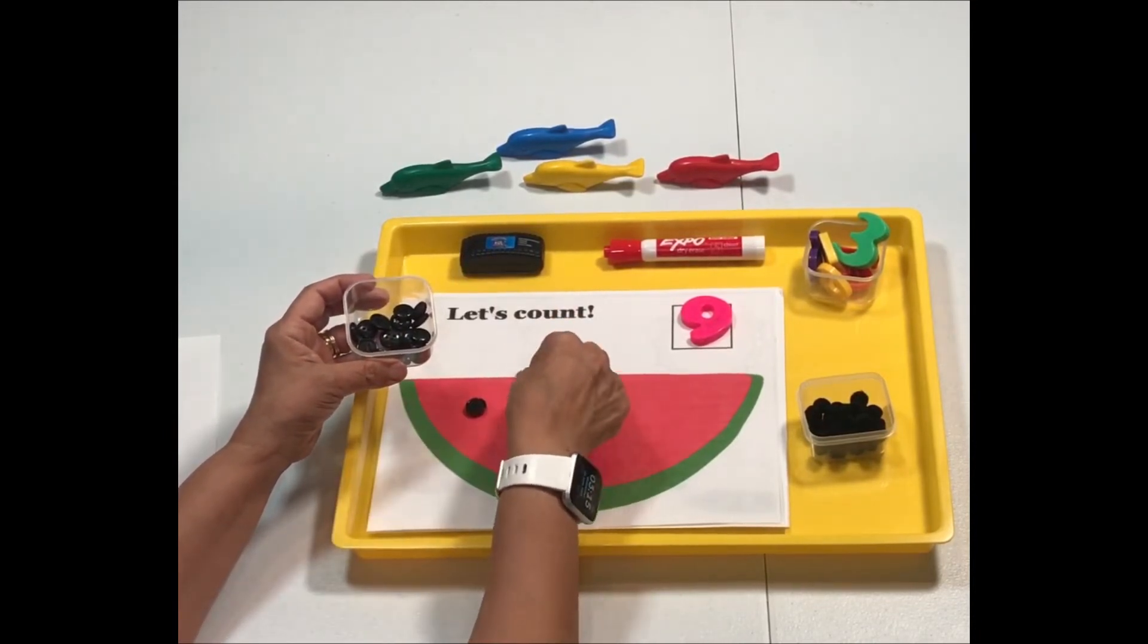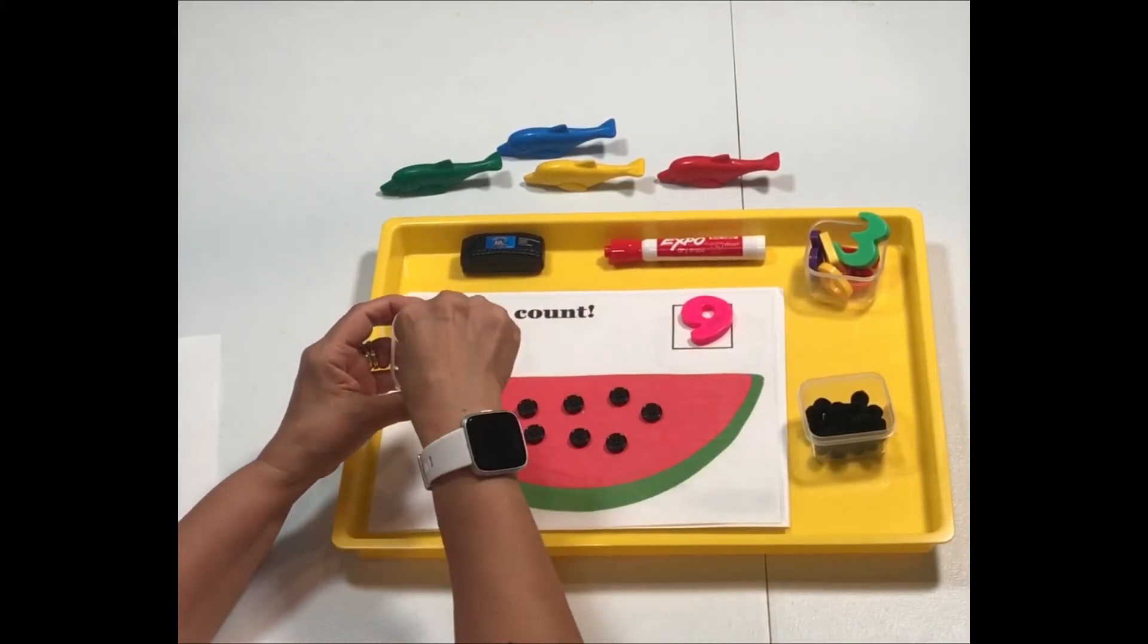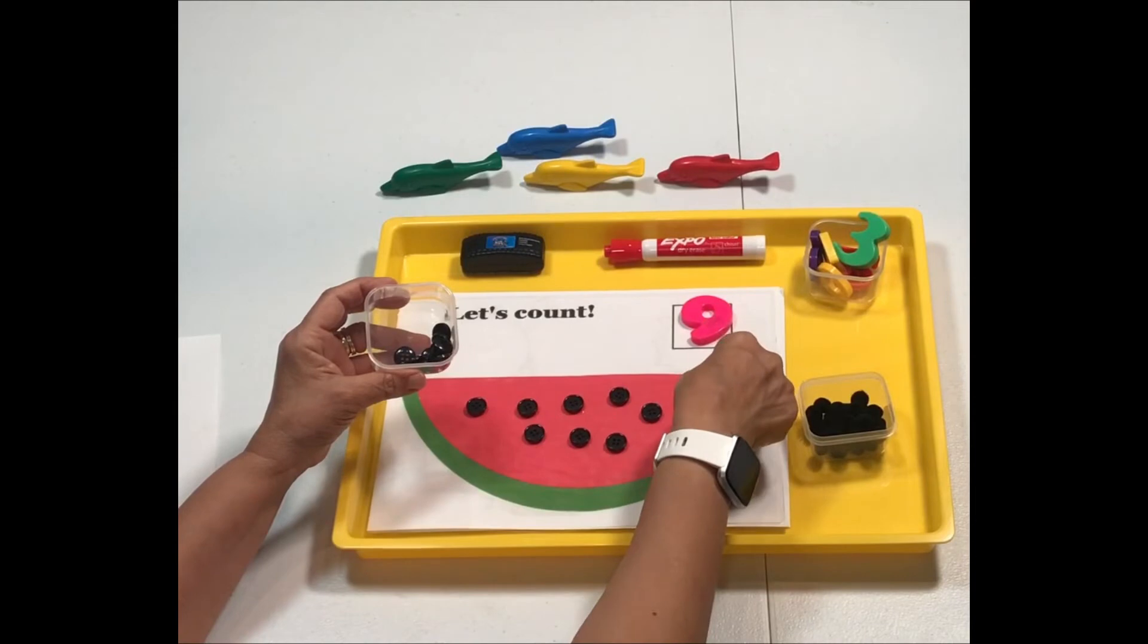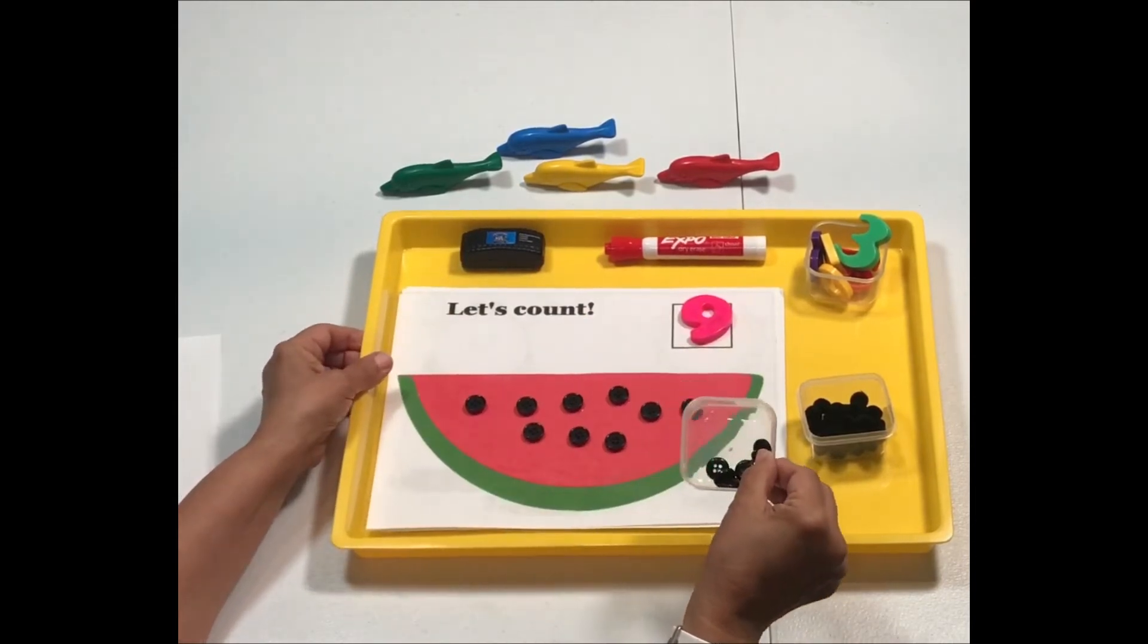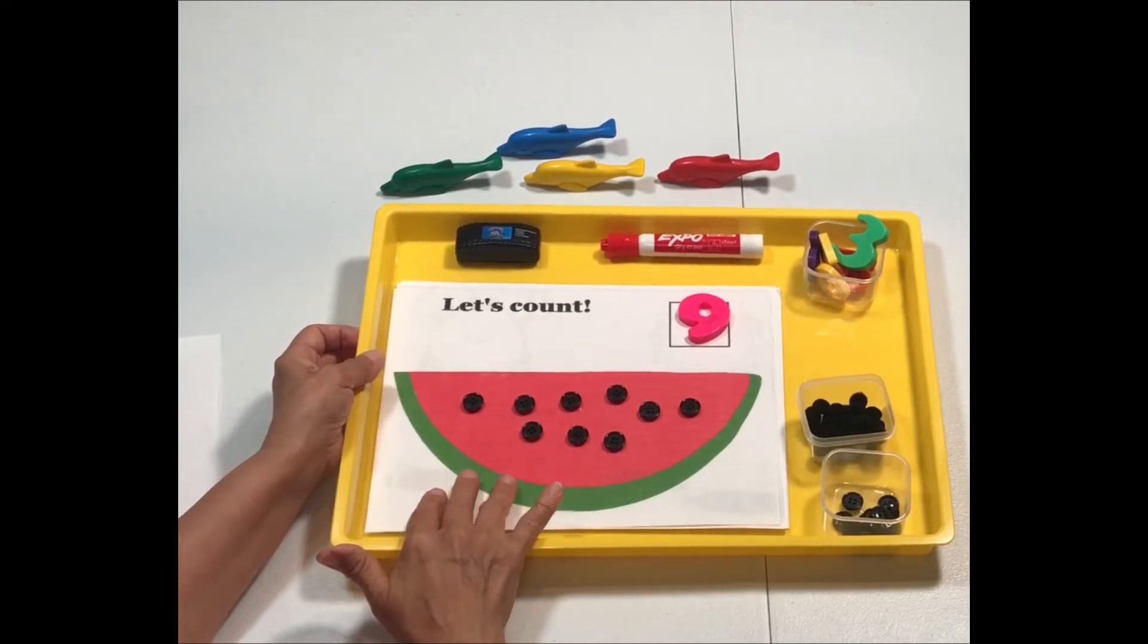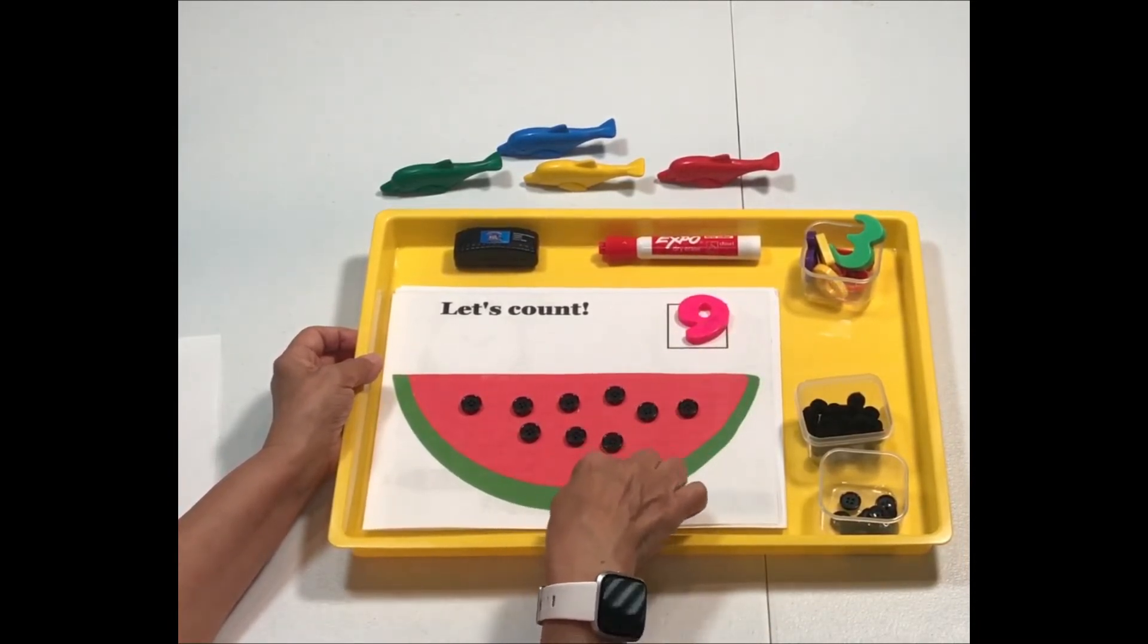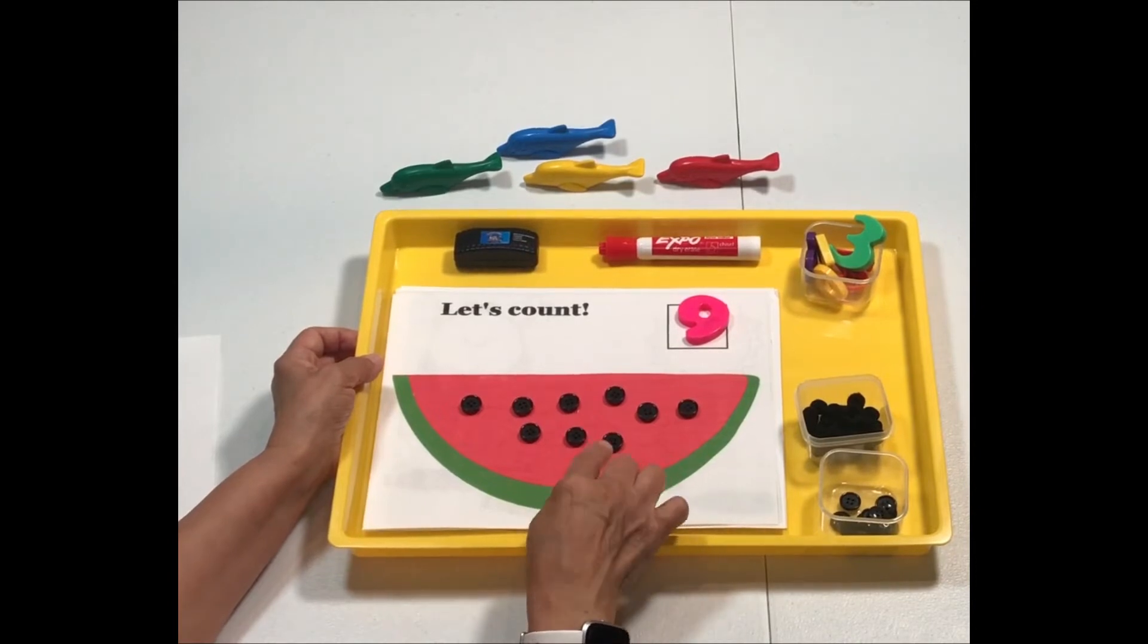We're going to count up to nine: one, two, eight, nine. Super fun way to count. This is a number quantity activity. We put the number and then we count the watermelon seeds.